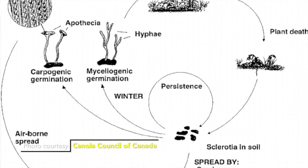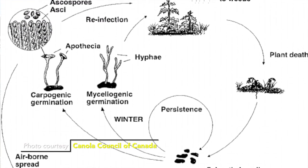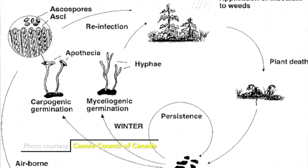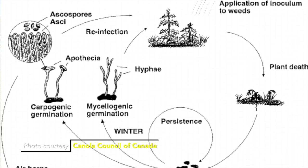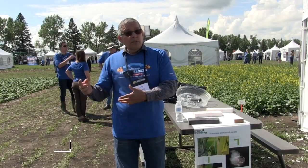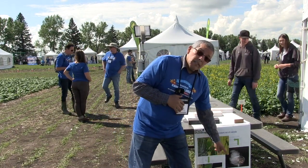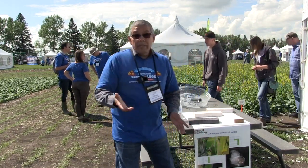Now when you harvest, your machines are cutting the stems and releasing those Sclerotia back into the ground. So the next time you come around, that Sclerotia will be ready to start the cycle again.